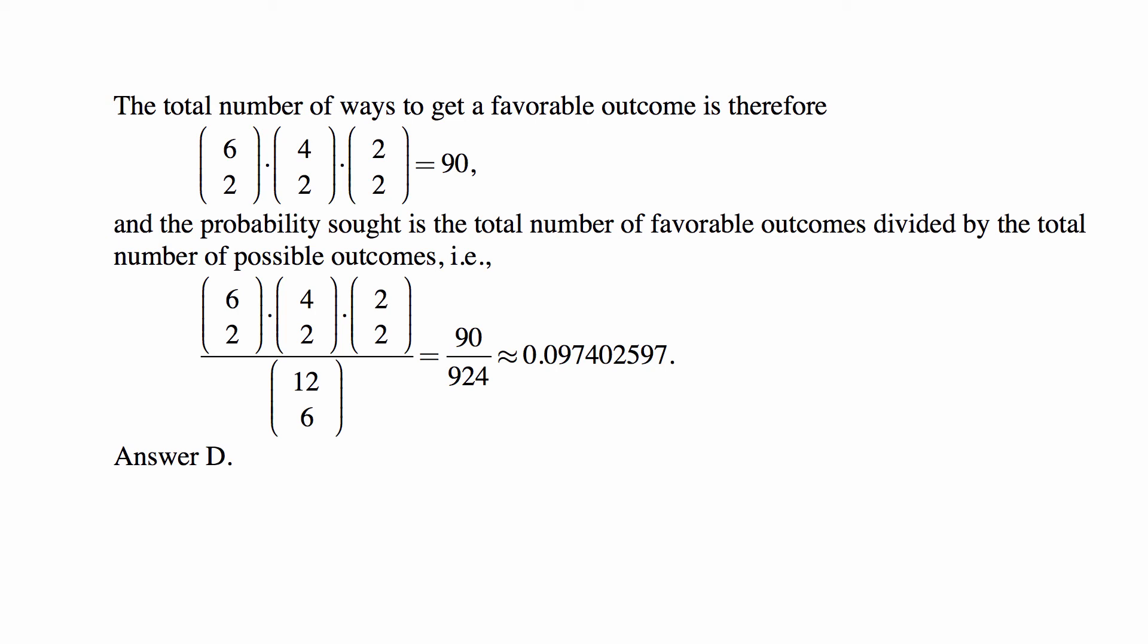And the probability sought is the total number of favorable outcomes divided by the total number of possible outcomes, the standard basic probability formula. So it's 90 over 924, or approximately 0.097402597, and that's answer D.